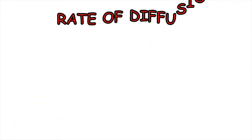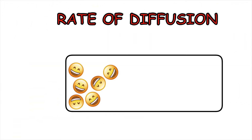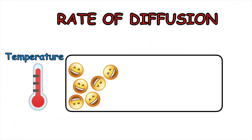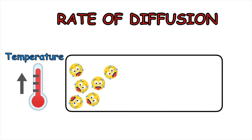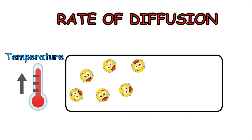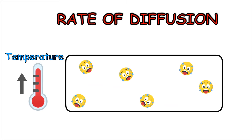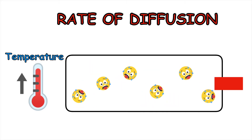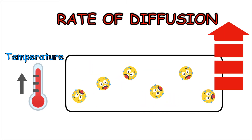The rate of diffusion can be changed by temperature. As temperature goes up, molecules become hot and move faster; therefore, the rate of diffusion increases.